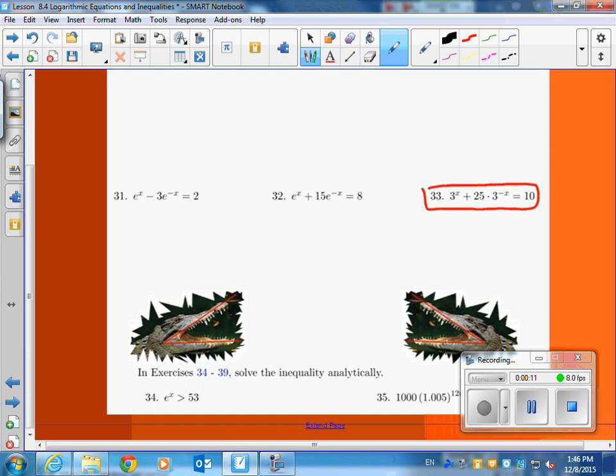33 is not going to give you any problems if you wrote 3 to the x plus 25 over 3 to the x, because that's what 3 to the negative x is. Anybody confused with that? Anybody want to see why it's over 3 to the x?